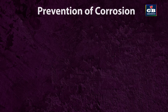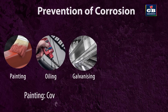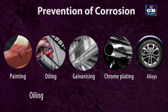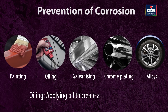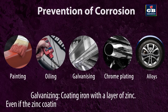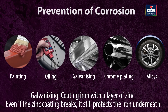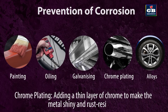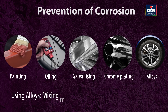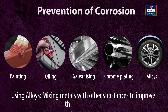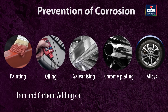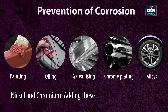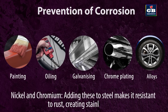Prevention of corrosion. To prevent rusting, we use different methods. Painting: covering the metal with paint to keep air and moisture away. Oiling: applying oil to create a protective layer. Galvanizing: coating iron with a layer of zinc — even if the zinc coating breaks, it still protects the iron underneath. Chrome plating: adding a thin layer of chrome to make the metal shiny and rust resistant. Using alloys: mixing metals with other substances to improve their properties. For example, adding carbon to iron makes it stronger. Adding nickel and chromium to steel makes it resistant to rust, creating stainless steel.